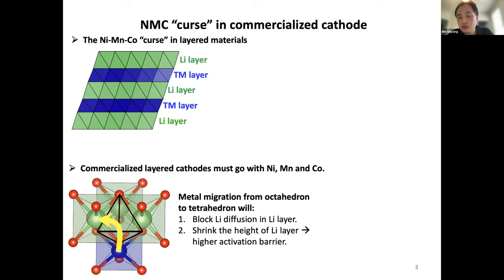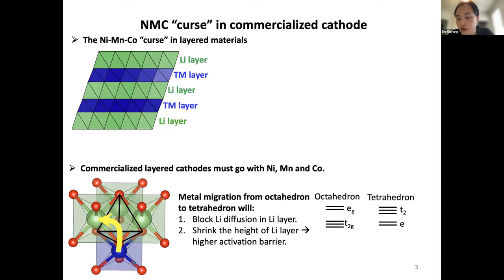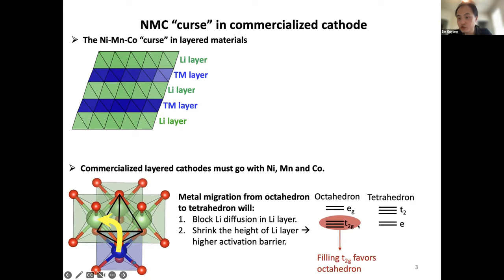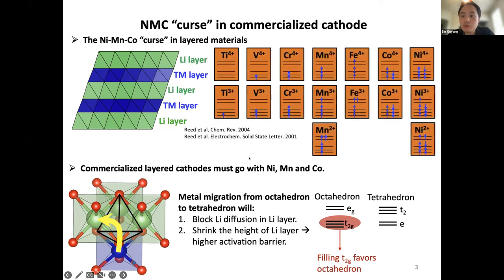Naturally, a good metal should prevent this transition metal migration. Chemistry tells you how to do that — it's related to the transition metal electronic structures. In octahedral coordination you have two E_g orbitals and three T2g orbitals; in tetrahedral coordination it's reversed. So we need a metal that favors octahedral and disfavors tetrahedral. The trick is to put three or six electrons to occupy all the T2g states, and then we can use this chemical principle to select metals.